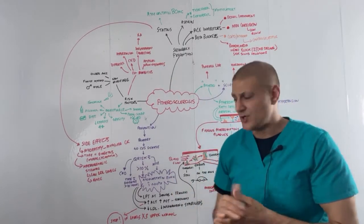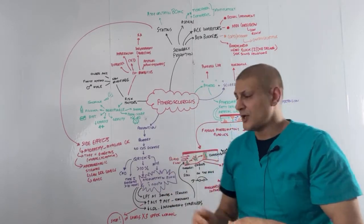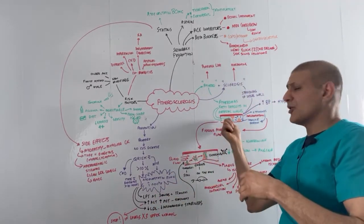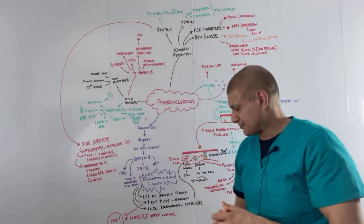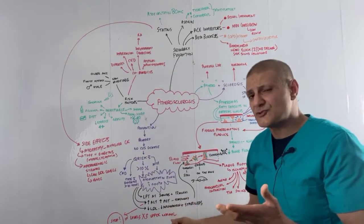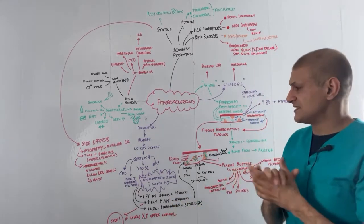How do the statins work? Atorvastatin decreases the level of LDL. Remember LDL is the main component of this fatty atheroma. So we reduce the LDL levels. And other pleiotropic effects of the statins include reducing the inflammation and it actually stabilizes the plaque.